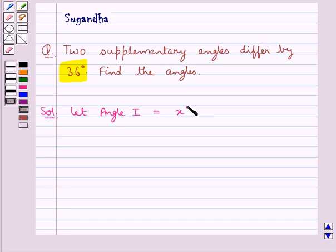The sum of two angles would be 180 degrees, and hence we can say that angle II equals (180 - x) degrees.